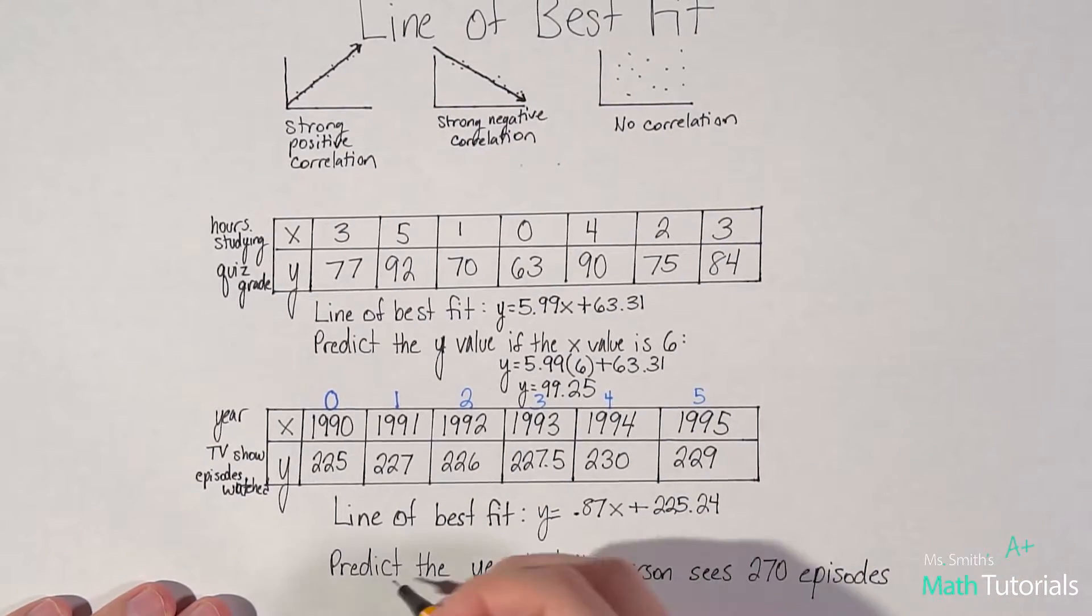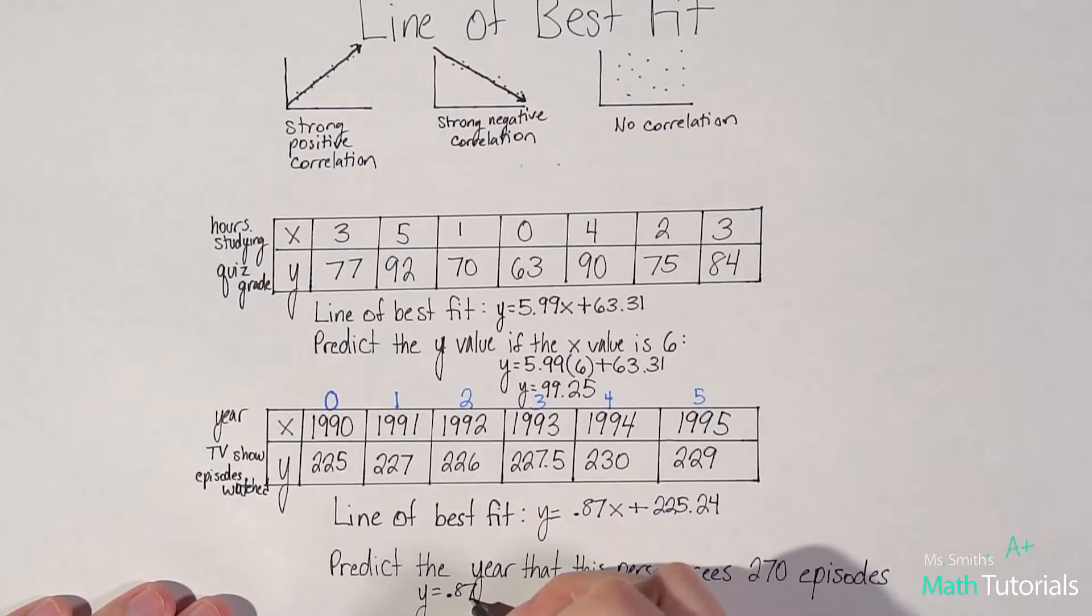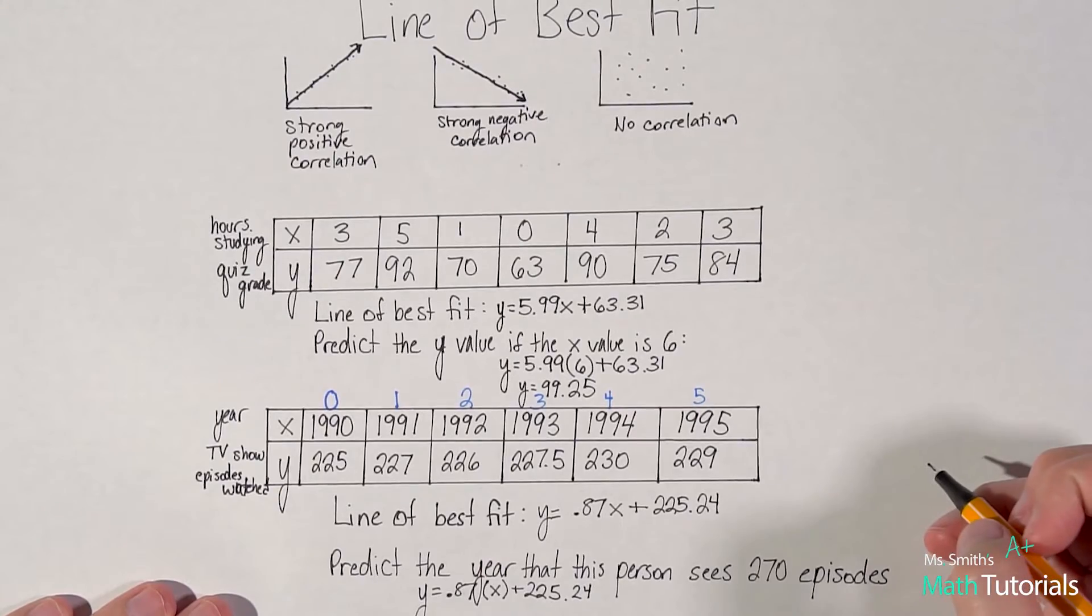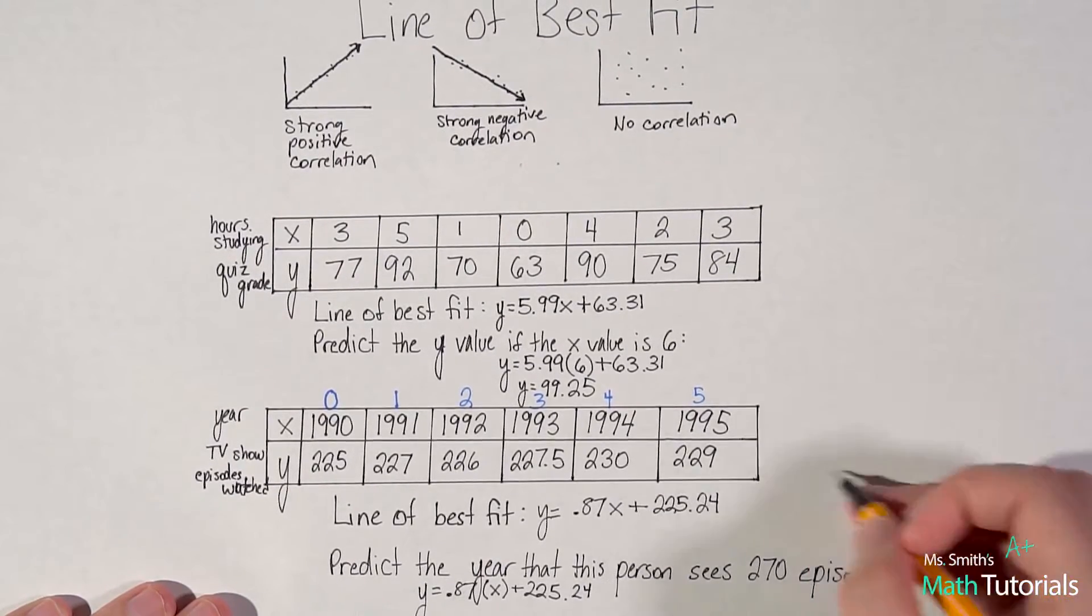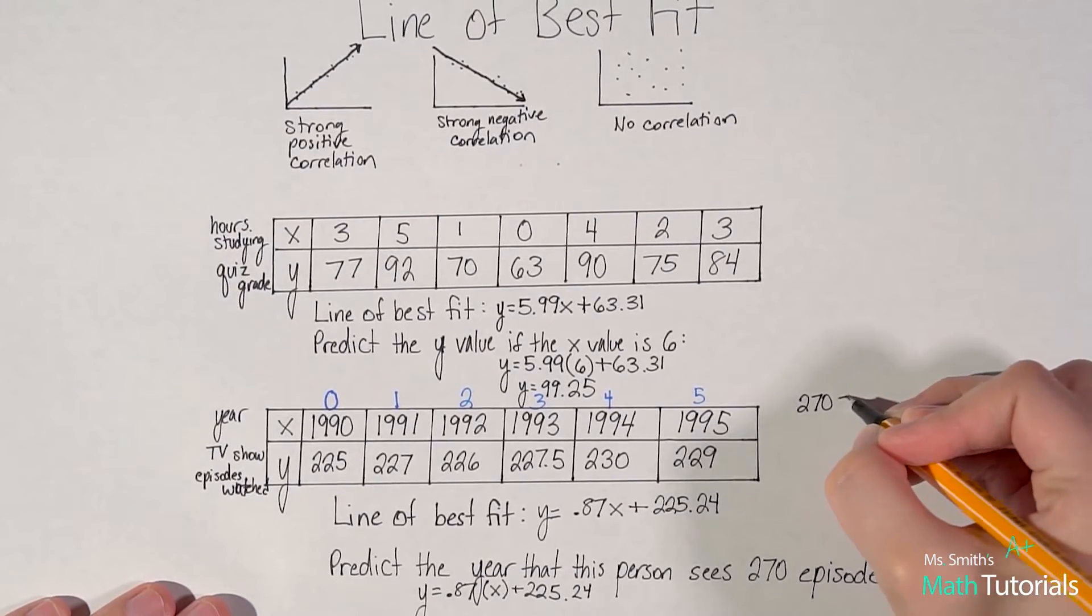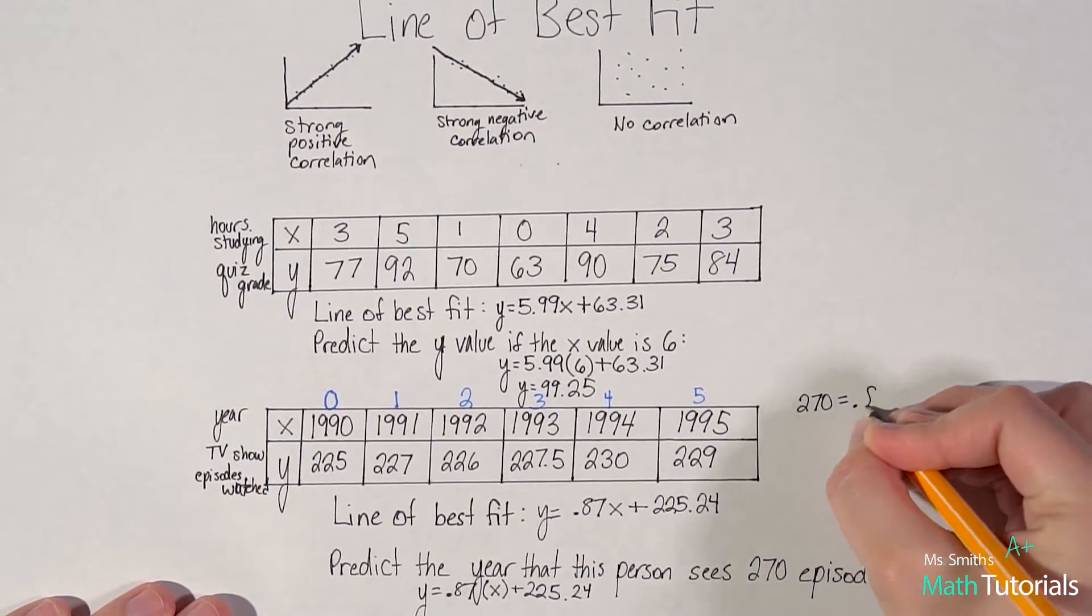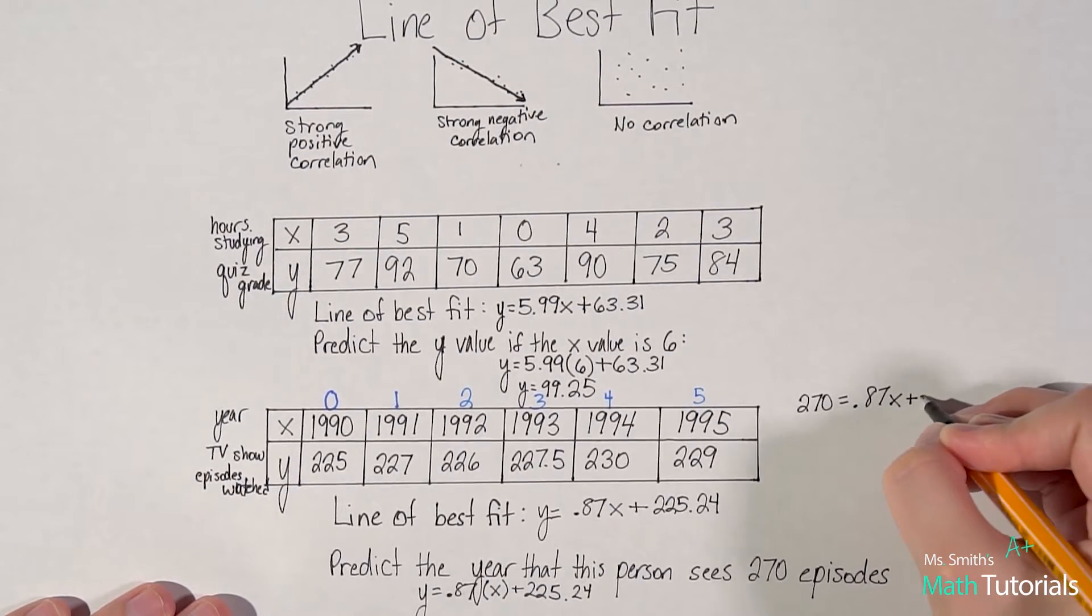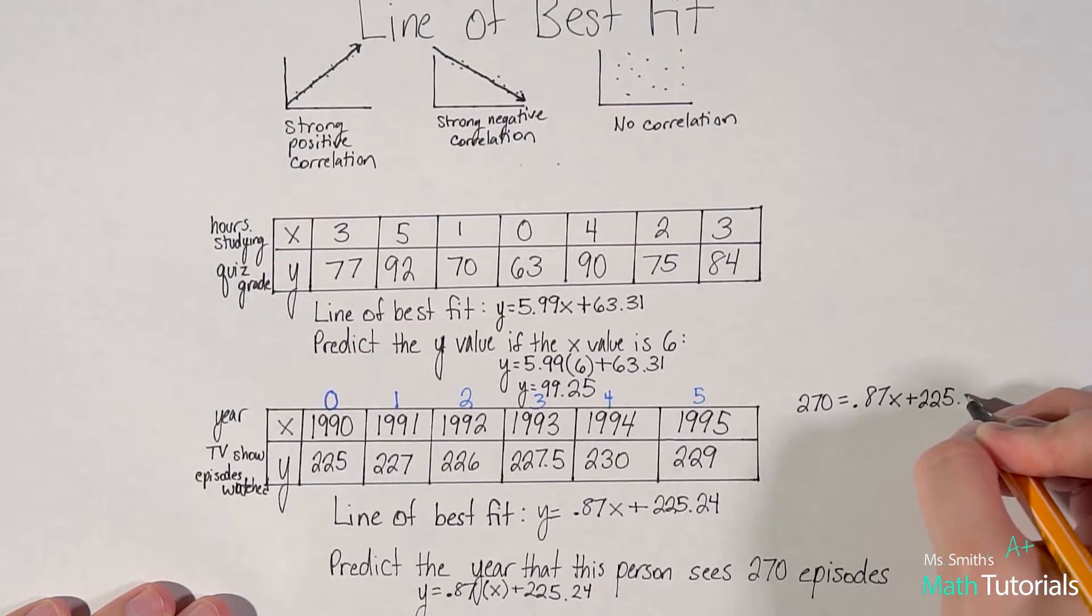Let's just fill in our equation. So, we're searching for y. I'll just write out the equation. 0.87x plus 225.24. Using this equation, I'm going to sub in 270 for y and solve for x. I'm going to bring my work up right here so I can work freely. My y value is 270 equals 0.87x plus 225.24.